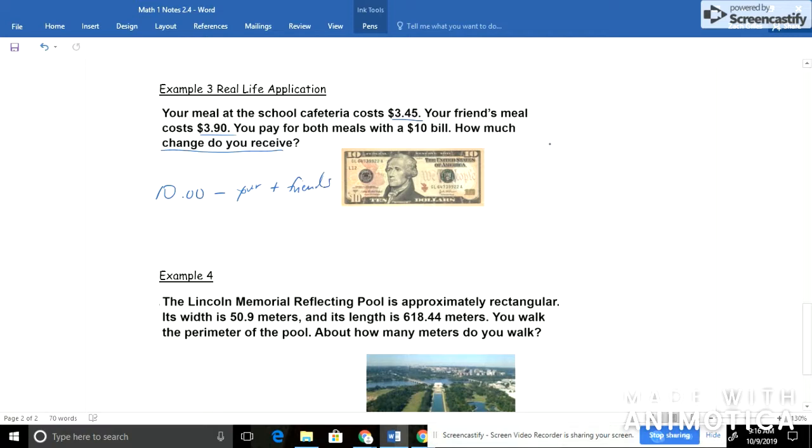So, let's do that. Your meal was $3.45. And we want to add to that your friends. We'd come up with a total of $7.35. We need to take our $10 that we paid with and subtract how much our cost was. So, what's the difference? Well, you could use a little bit of mental math here.